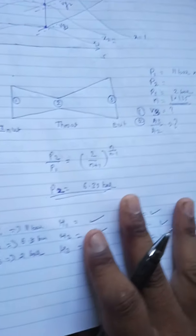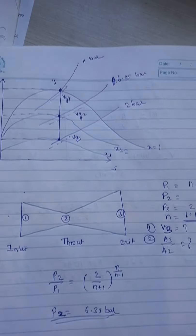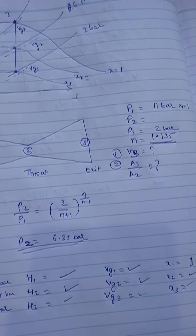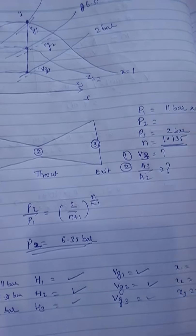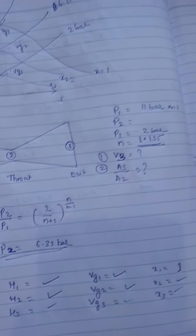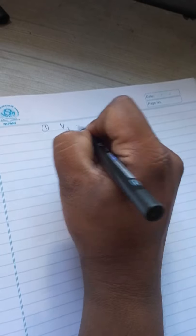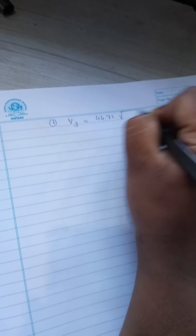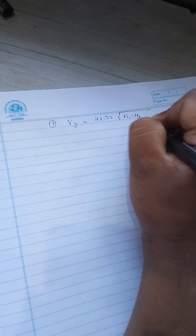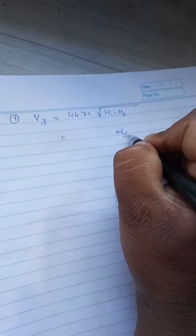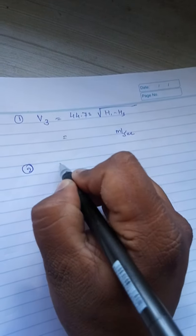This all the values you just plot here. Now I am ready with all the values from the steam Mollier chart. Just what all things he has asked - he has asked you to calculate first one exit velocity. So exit velocity V3 I need to calculate. V3 is equal to 44.72 root of H1 minus H3. So values are here, you substitute here you will get the value in terms of meter per second.